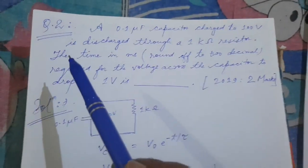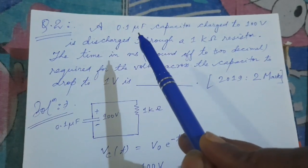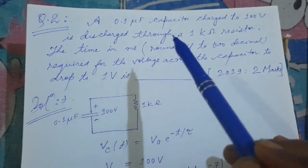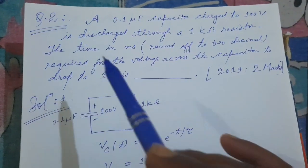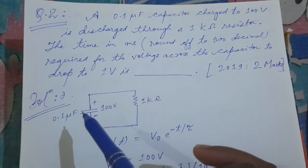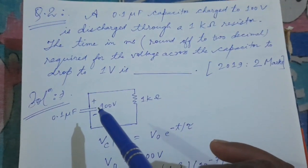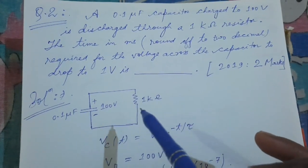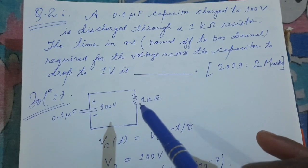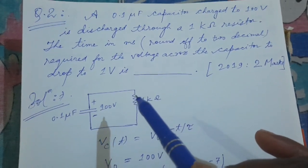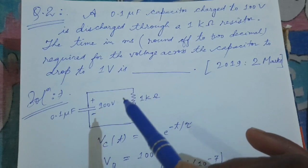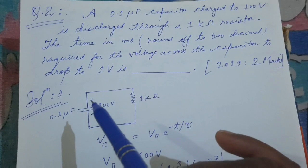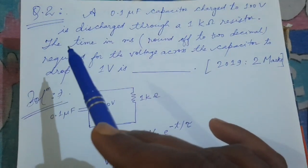Let's move on to Question number 2. A 0.1 microfarad capacitor is charged to 100 volts and is discharged through a 1 kilo-ohm resistor. The resistor is a dissipating element — power is consumed and there is a power loss. The capacitor discharges through this 1 kΩ resistor. We need to calculate the time required.